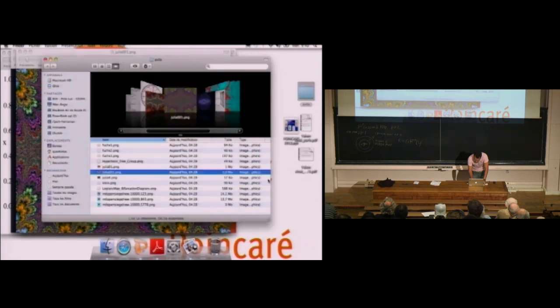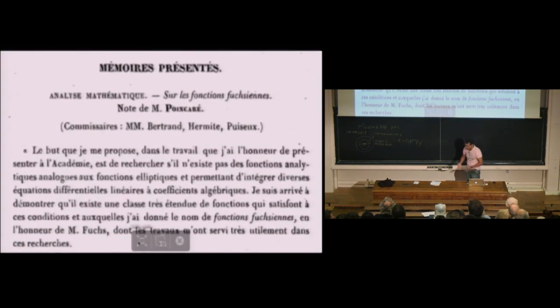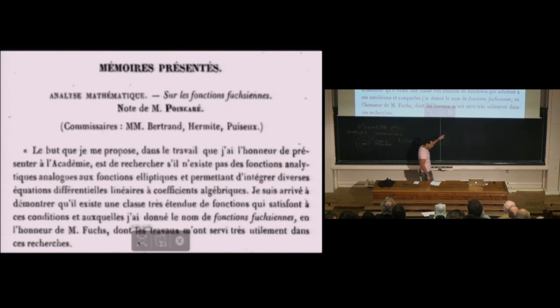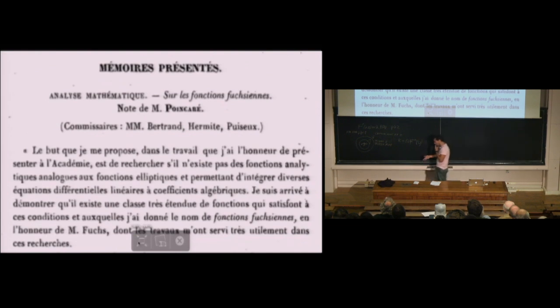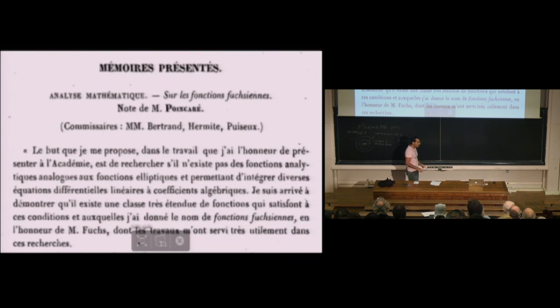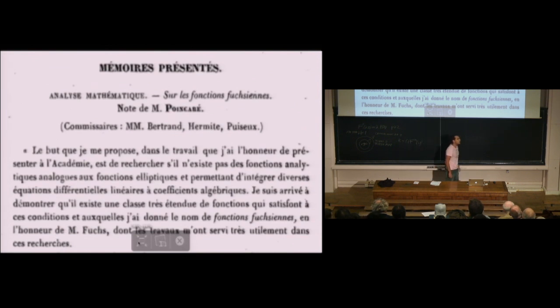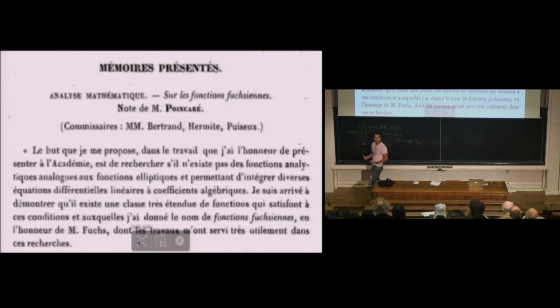Let's see what Poincaré series are, starting from how they were introduced. I got a scan from the archives — not very good quality — but this is from the first paper that Poincaré did about Fuchsian functions. It's a paper that precedes his paper about Fuchsian groups, because he was interested in Fuchsian groups because of those Fuchsian functions, and not the other way around. In this article he defines Poincaré series, with the motivation that he is looking for functions analogous to elliptic functions, with the goal of integrating linear differential equations with algebraic coefficients.